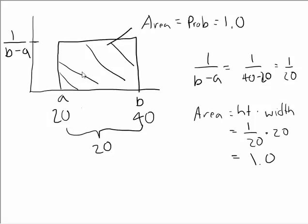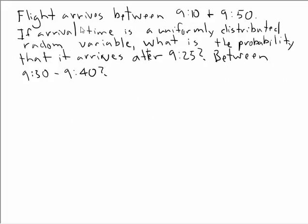All right, now let's use this in an example. There's planes arriving between 9:10 and 9:50. We say that the arrival time is a uniformly distributed random variable. And we want to know what the probability is that the plane arrives after 9:25 and also a second problem between 9:30 and 9:40. Well, okay, let's start with the first one.